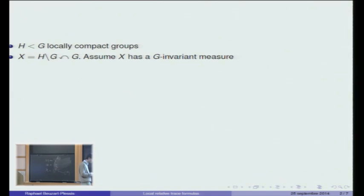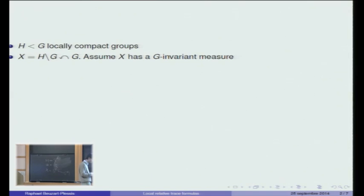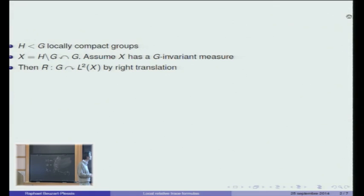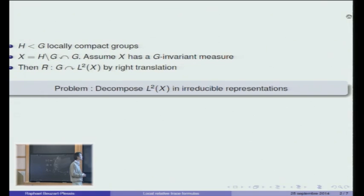Start with two locally compact groups, H and G, with H as a subgroup of G. Then you may form the quotient G over H, on which G acts on the right, and assume moreover that X is equipped with a G-invariant measure. Then you can form the L2 space of X, and you have a natural unitary action of G on that space — I denote it by R — so it's what we call a unitary representation. And then you may ask the following very natural question: what is the decomposition of this representation in terms of irreducible representations?